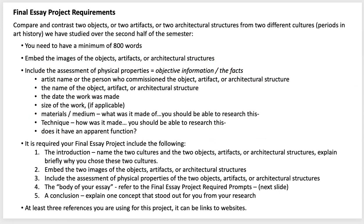You'll include the physical properties of each object. For most objects and architecture from the second half of the semester, we either know who made it or who commissioned it. Most objects have an identified name, and you should include the date it was made, the size, what it was made of, and how it was made. There's lots of information about how designers of large architectural monuments chose their materials and what their process was, and of course what its function was.